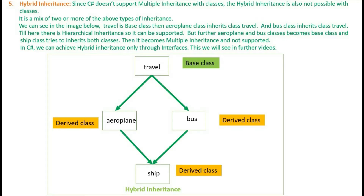Aeroplane class becomes a base class for class Ship, and derived class Ship also tries to inherit class Bus. So class Bus becomes another base class for class Ship. Now there are two base classes for class Ship, which is the derived class. This makes it multiple inheritance, and multiple inheritance is not supported in C# for classes.